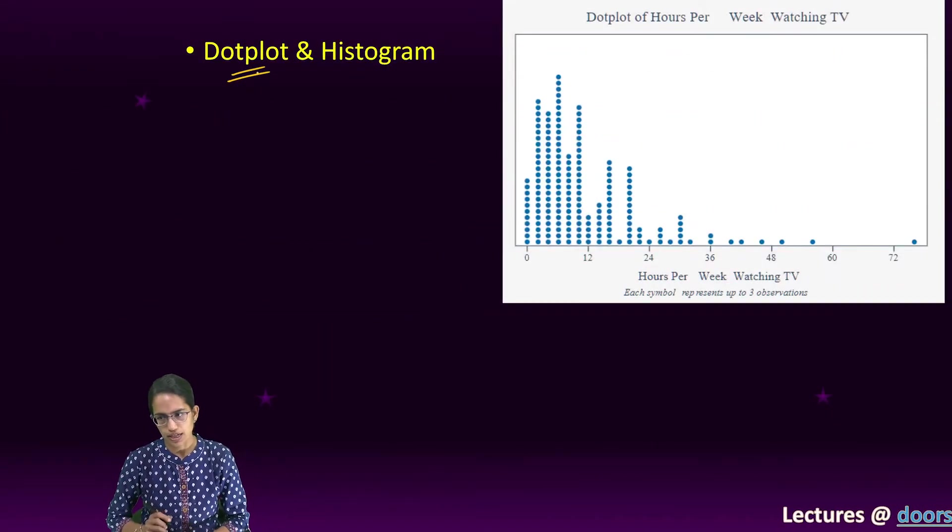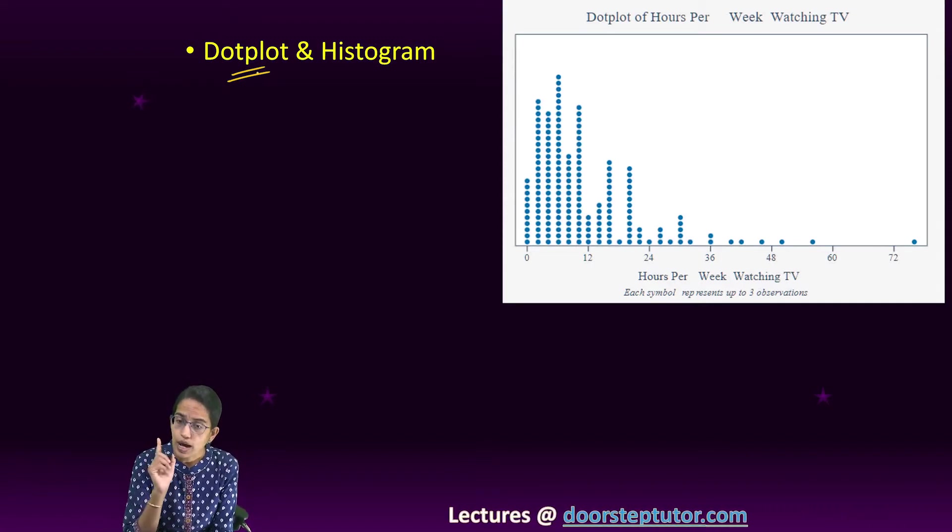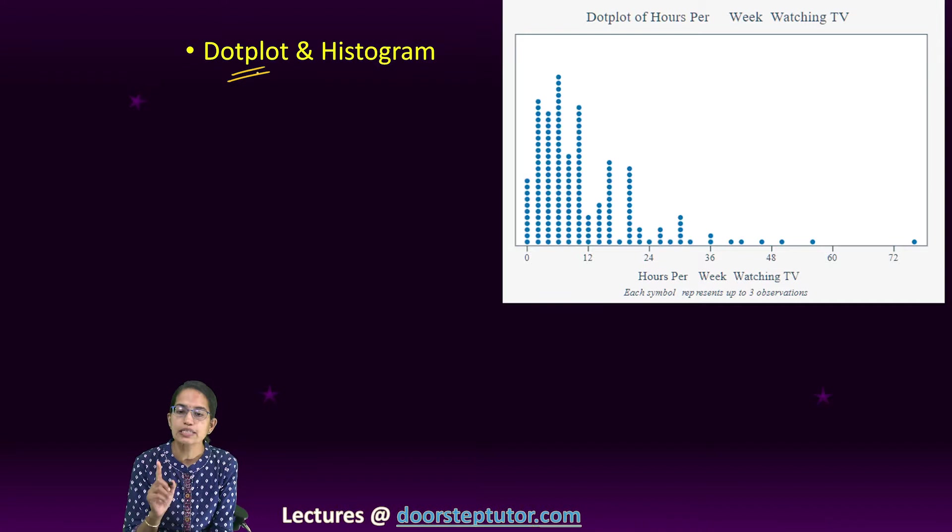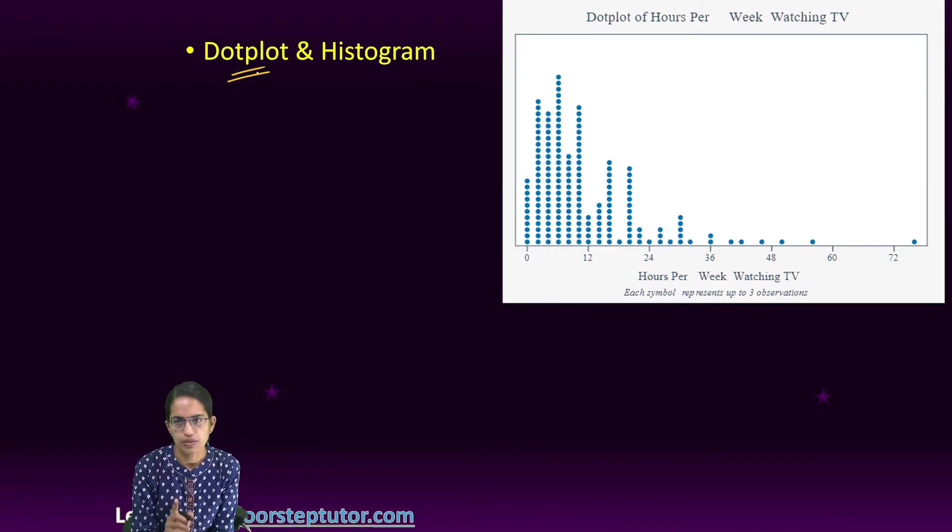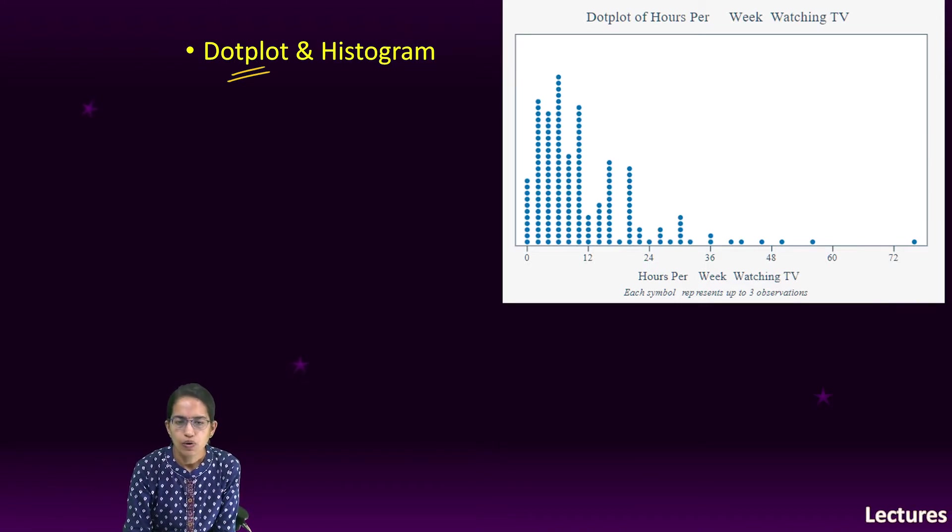A typical representation of data when it is just one quantitative variable. Let's say I have data on how many hours per week of TV do I watch. These values would vary for each person, and this is how I plot it.